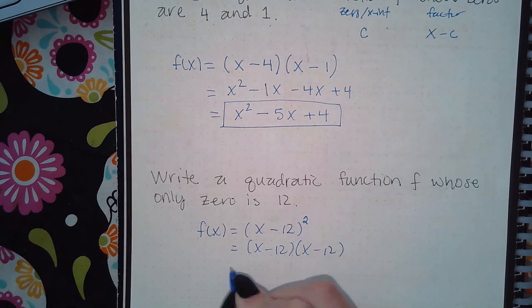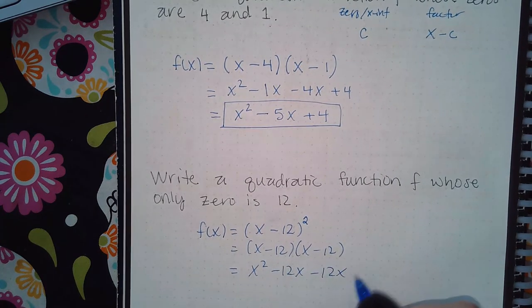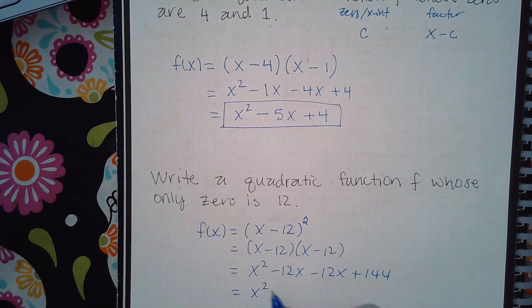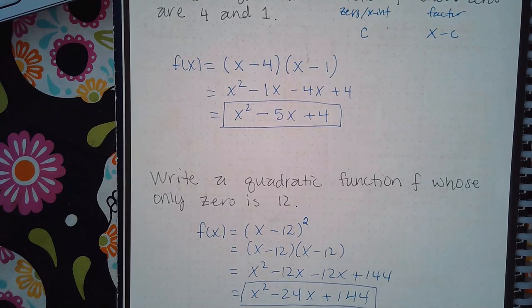I get x squared minus 12x minus 12x plus 144, or x squared minus 24x plus 144. This is the quadratic that they are looking for.